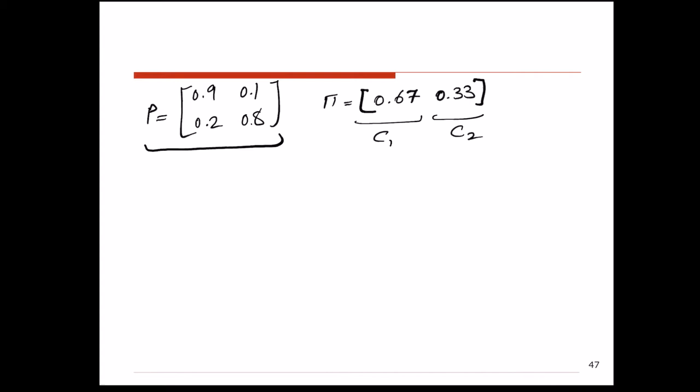We have 100 million customers. In the steady-state, when the system reaches equilibrium, if we stop the system and pick any random customer, we expect that with 67% chance that person is drinking cola 1, and with 33% chance, that person is drinking cola 2.